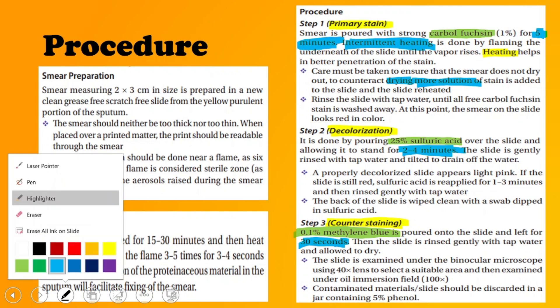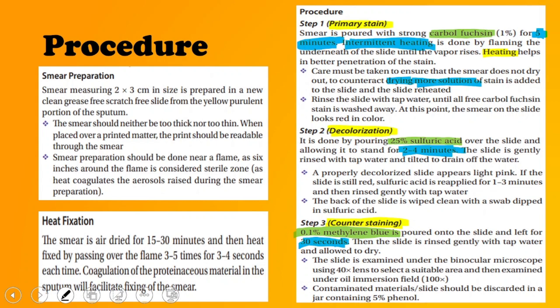After primary staining and rinsing, the slide should appear red in color. After applying 25% sulfuric acid for decolorization and waiting two to four minutes, the slide should appear light pink in color. If it still appears red, the sulfuric acid must be reapplied and decolorization repeated until a proper light pink color is achieved.